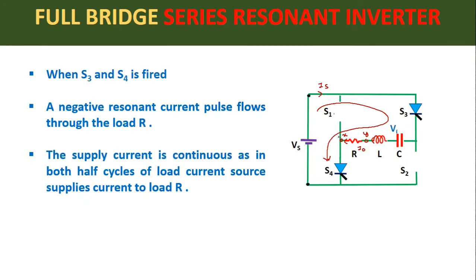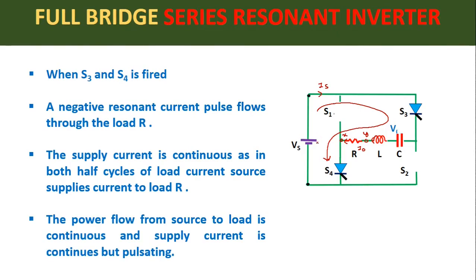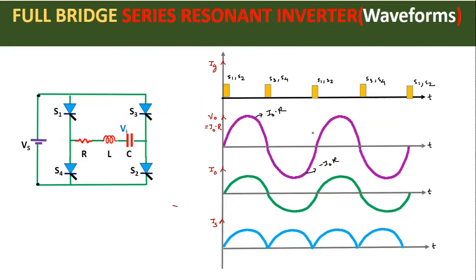When S3 and S4 are fired, we get a negative resonant current pulse flowing through resistor R. The supply current in this circuit is continuous, as in both half cycles the source is supplying current to the load continuously. Therefore the power flow from the source to the load is continuous, but the supply current is pulsating in nature due to the presence of the underdamped RLC resonant circuit.